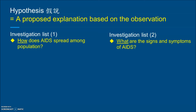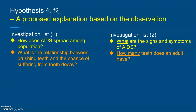For the first pair, on the left hand side: I would like to investigate how AIDS spreads among the population — the focus is 'how', the mechanism behind it. On the right hand side: what are the signs and symptoms of AIDS — the focus is 'what'.